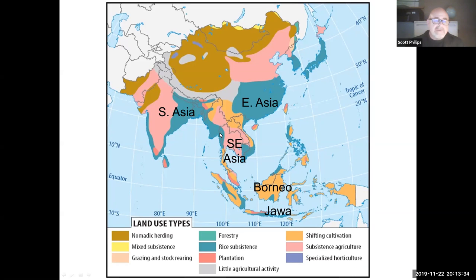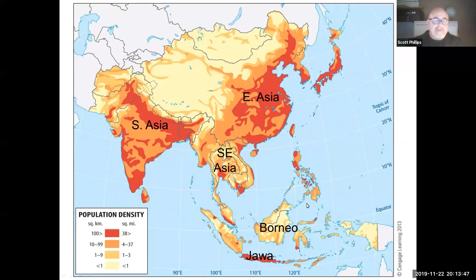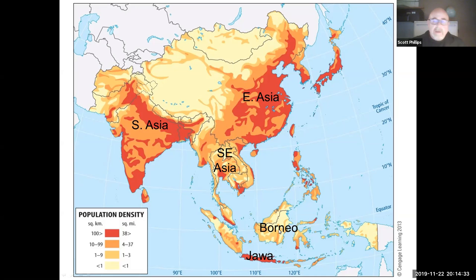The areas in blue in Southeast Asia are where you have high productivity agriculture; the tan areas are where you have shifting cultivation, which is lower productivity. Looking at a population map, you can see a patchwork of high and low populations. Populations are massive in South Asia and East Asia, but in Southeast Asia it's a mix — overall less densely populated than its neighboring realms. You do have concentrations of population, for example on the Mekong River Delta and on the island of Jawa with its highly productive volcanic soils, but in the highlands of the mainland and islands like Borneo, you have very low density populations.